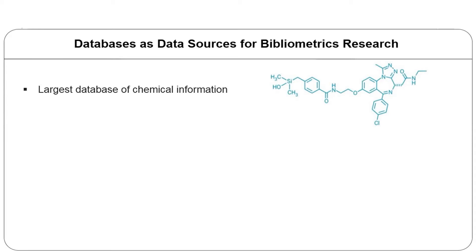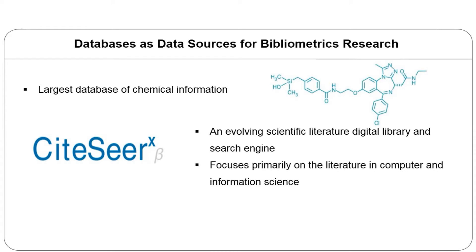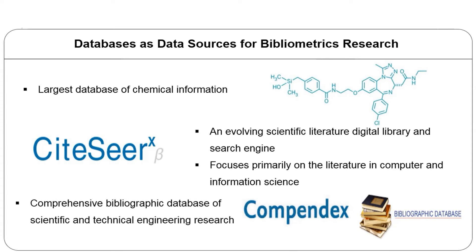CAS is published by a division of the American Chemical Society. Its objective is to find, collect and organize all publicly disclosed substance information. The second widely used data source is CiteSeerX — an evolving scientific literature digital library and search engine focused on computer and information science. Another popular source published by Elsevier is Compendex, the most comprehensive bibliographic database covering all engineering disciplines.